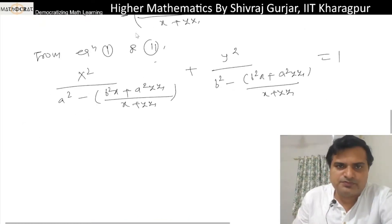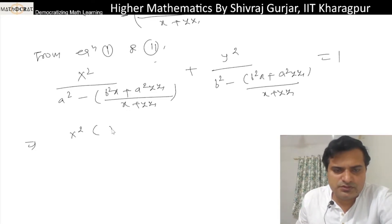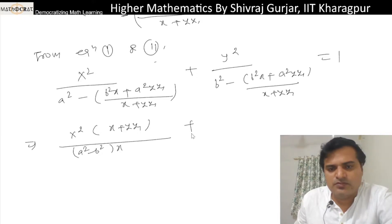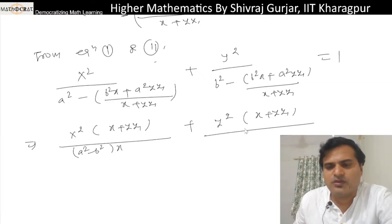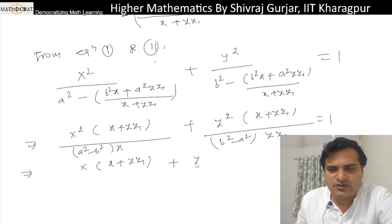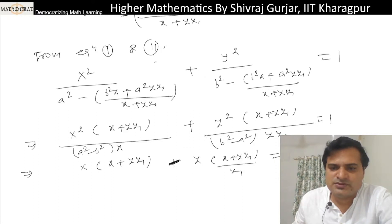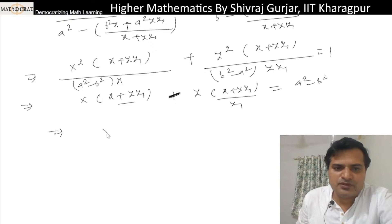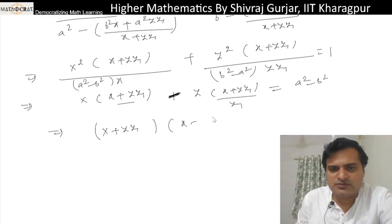So this can be written as: x²·(x + y·y₁)/(a² − b²)·x plus y²·(x + y·y₁)/(x + y·y₁) divided by y₁ equals 1. So this is the differential equation.